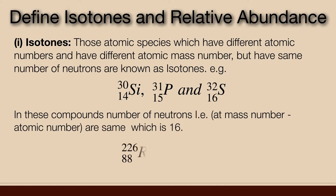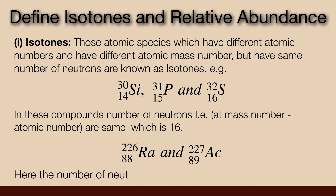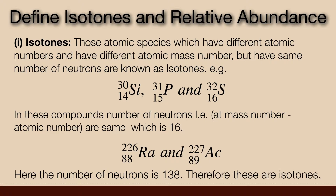Other examples are Radium-226 and Actinium-227. Here the number of neutrons is 138, therefore these are also isotones.